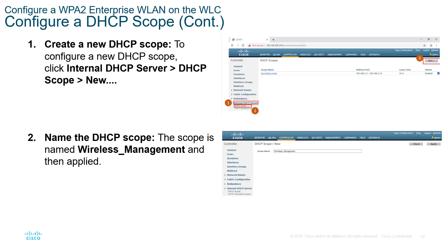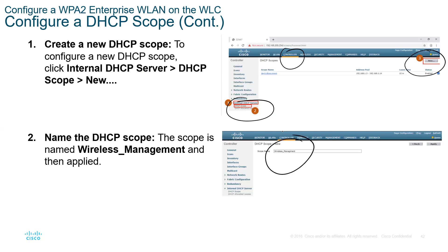The other wireless LAN clients connected to the network will get their IP addresses from the router, according to the topology we started with. So here we create the new DHCP scope. We are at the controller — we enter the internal DHCP scope, create the new scope, and then name it. In this case, it is named 'wireless management'.